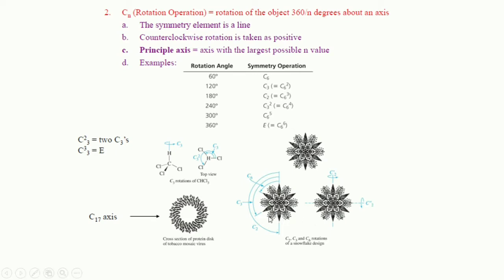Here are different other examples of rotation. We can see there are 6 faces of this molecule — this is actually a snowflake design. If we rotate it, we can perform C6 as well as C3 and C2, so there are multiple rotation operations possible in the snowflake. The principal axis here is C6 because it has the largest possible n value, while C2 and C3 would not be considered the principal axis.